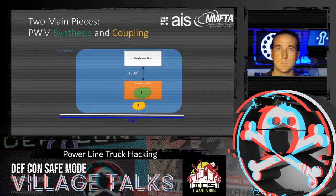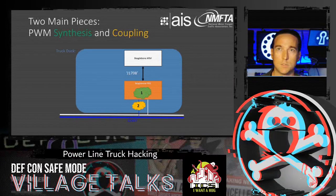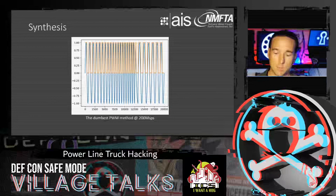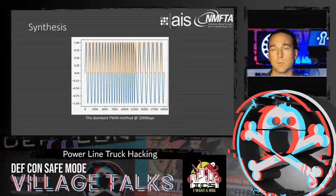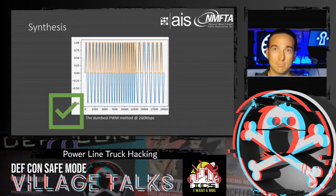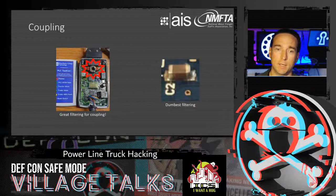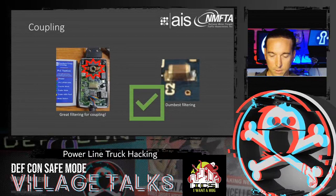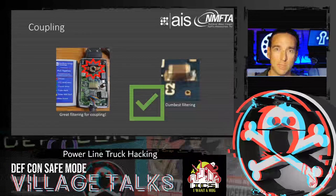Creating PLC signals has two parts: synthesize the PLC waveform with PWM, then couple it onto the PLC network. We tried the dumbest PWM first — turn it on when the target signal is above zero, off when below zero. The orange waveform is the dumb PWM; the blue is the true chirp. It actually worked. For coupling, we found a 100 nanofarad capacitor was sufficient, also serving as filtering. So the dumbest filtering and dumbest PWM got us what we needed.